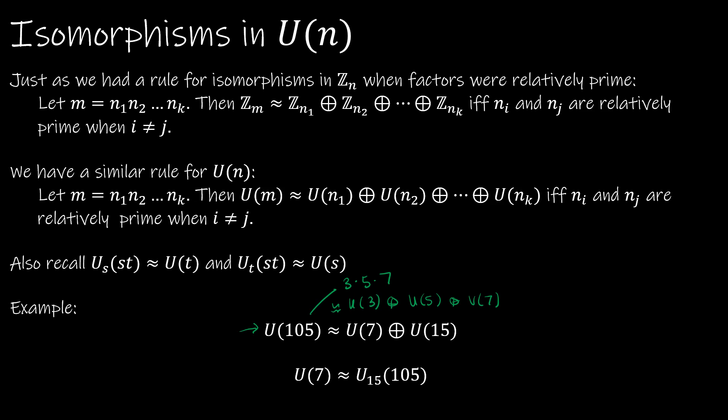We also had a rule that I said we would get back to and haven't yet, and that is this rule that says U_s(st) is isomorphic to U(t), and so forth. And so using this exact example, we can say that U(7) is actually isomorphic to U_15(105).